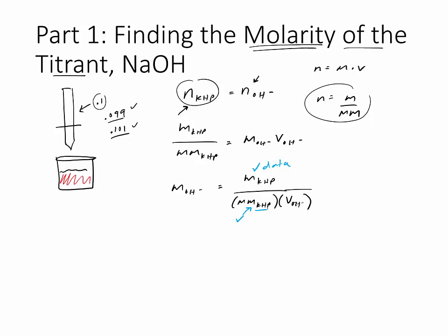The molar mass of KHP is a known value: 204.2 grams per mole. The volume of OH⁻ is from your data — it's the volume required to reach the endpoint, or stoichiometric point.